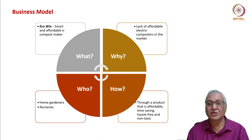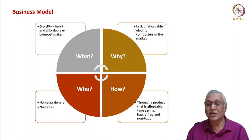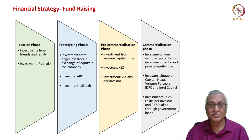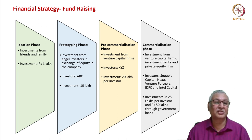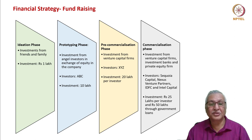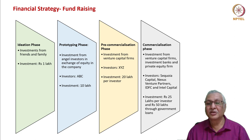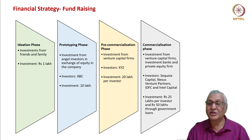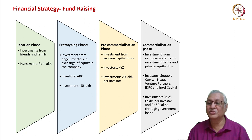Place: sales and service at the same store, omnichannel distribution, coverage in metro and tier-one cities, e-commerce services. Promotion: positioned as an essential household requirement, marketed through demos, exhibitions, social media influencers, and a strong environmental empathy message. The business model answers four questions: what (smart affordable eCompost maker), why (dearth of affordable electric composters), who (home gardeners, nurseries, residential communities), and how (affordable, time-saving, hassle-free, non-toxic). Fundraising: ideation phase — ₹1 lakh from friends and family; prototype phase — ₹10 lakhs from angel investors; pre-commercialization — ₹20 lakhs per investor; commercialization — venture capital, investment banks, private equity.